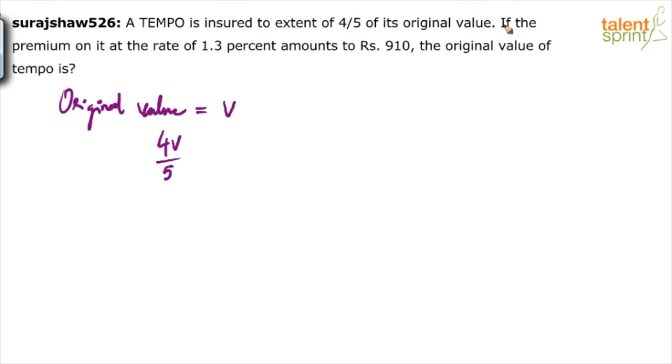Now he says if the premium on it—see, you have to pay a premium for getting your vehicle insured. So it says the premium on it at the rate of 1.3% amounts to rupees 910. So it's very simple that the premium is calculated at 1.3%. So 1.3% of this amounts to 910. So I can say 1.3% of 4V/5 is equal to 910 rupees.